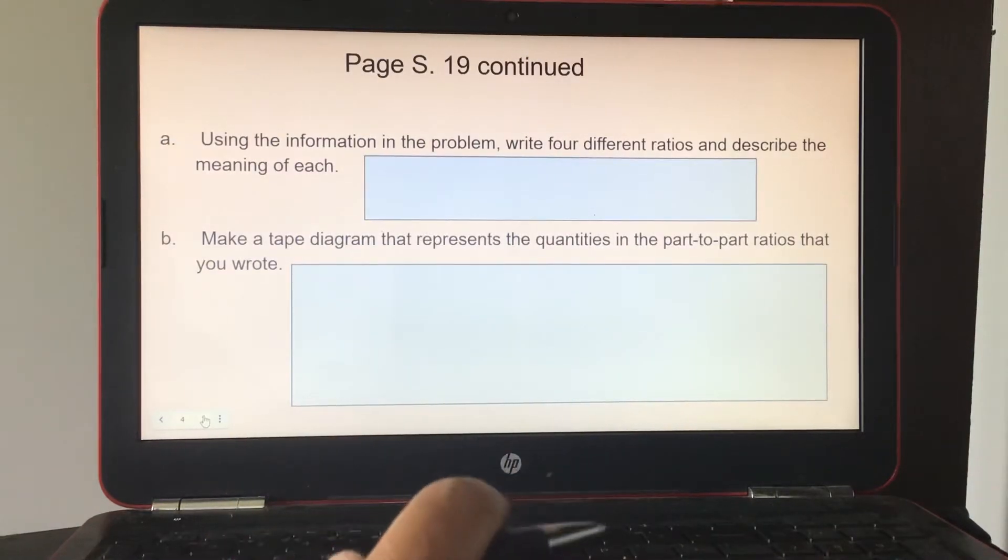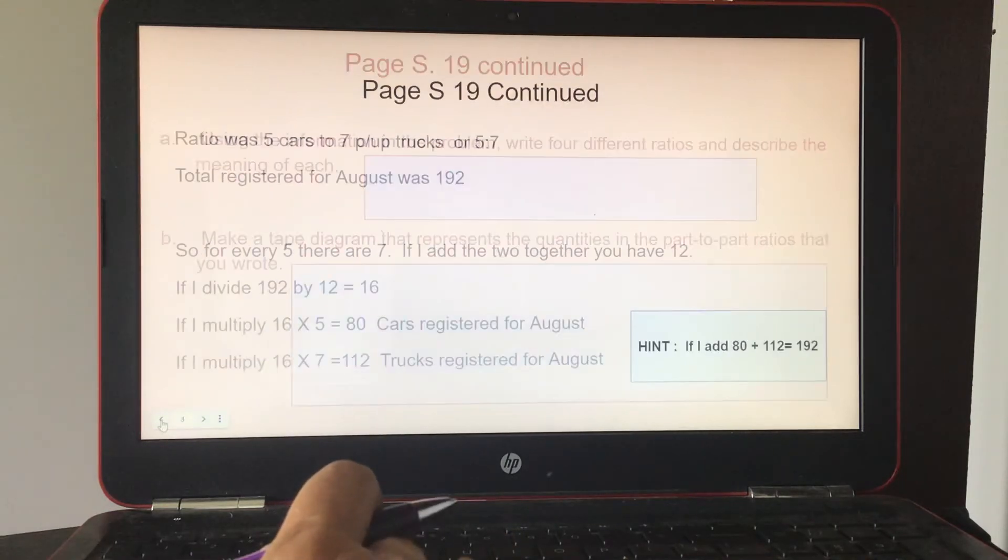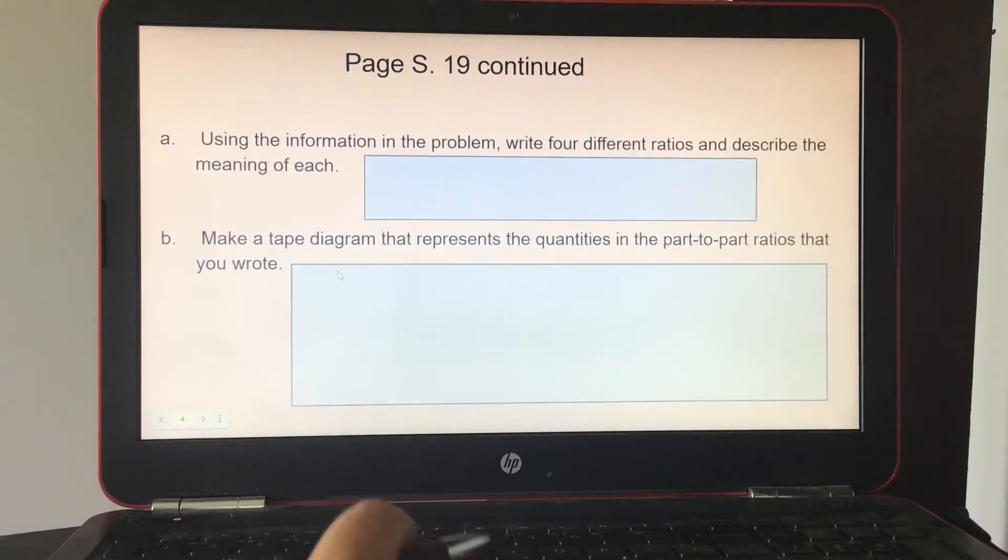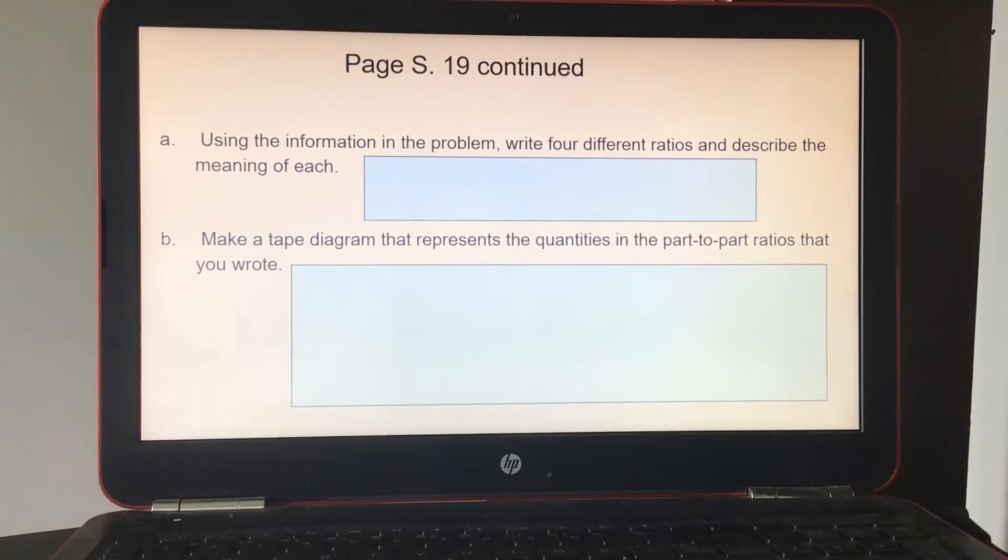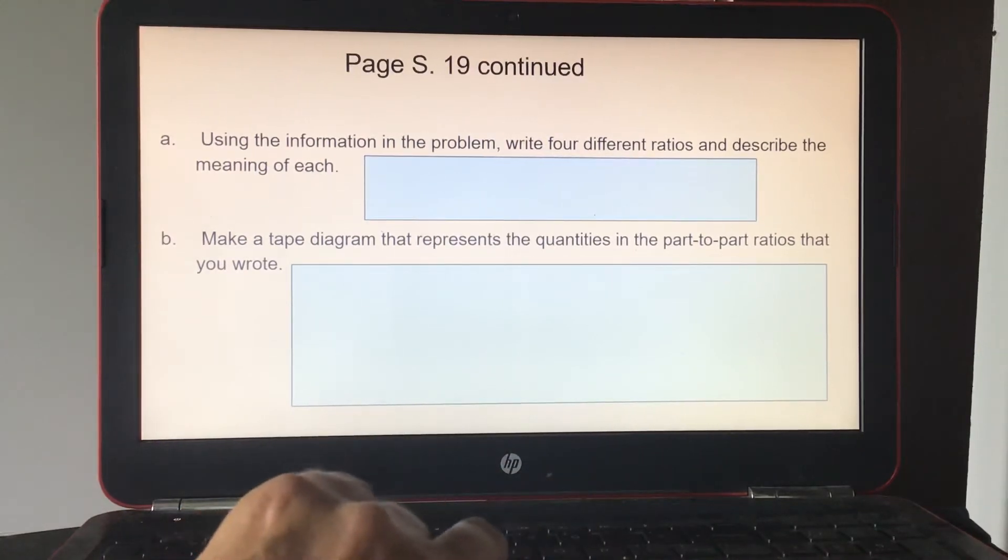Okay, we are on page 19. Using the information in the problem, write four different ratios to describe the meaning of each. So if we go back, take that 5 to 7, and I told you kids to multiply, start with 2. So multiply 5 times 2, and then 7 times 2. And then whatever that ratio is, then do 5 to 7 again, multiply it by 3, both numbers. That would give you another equivalent ratio. Keep going. But usually I told you to do 2, 3, 4, and 5 if they ask you for the first 4.